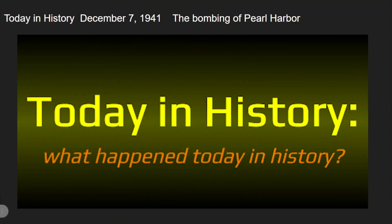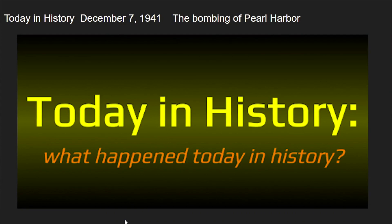Today in history, December 7, 1941: the bombing of Pearl Harbor. At 7:55 AM Hawaii time, a Japanese dive bomber bearing the red symbol of the rising sun of Japan on its wings appeared out of clouds above the island of Oahu. A swarm of 360 Japanese warplanes followed, descending on the United States naval base at Pearl Harbor in a ferocious assault.